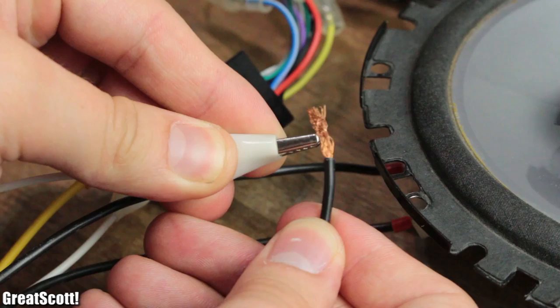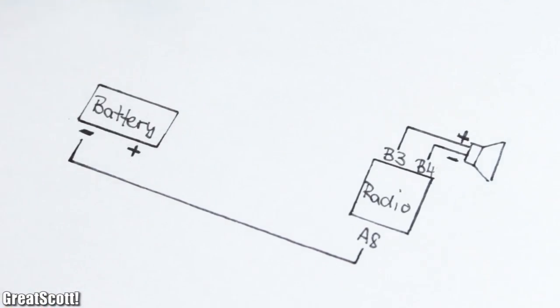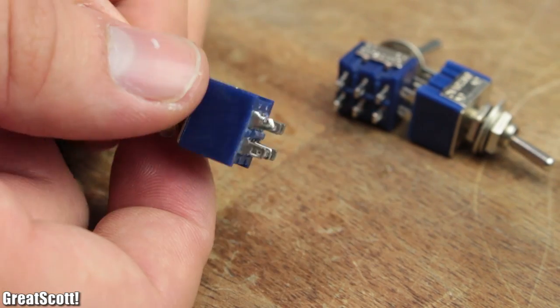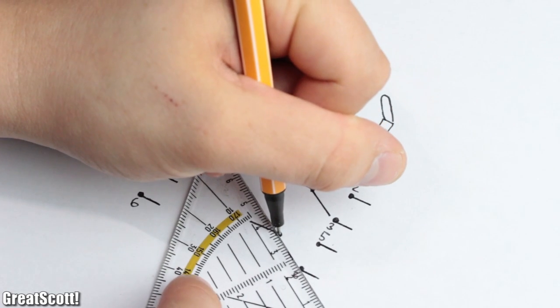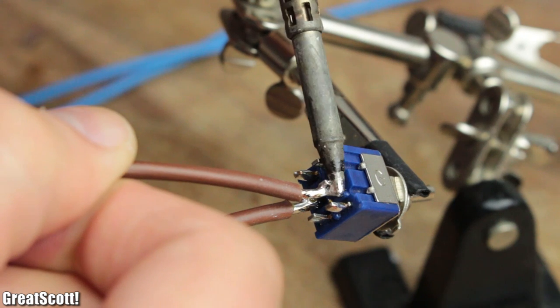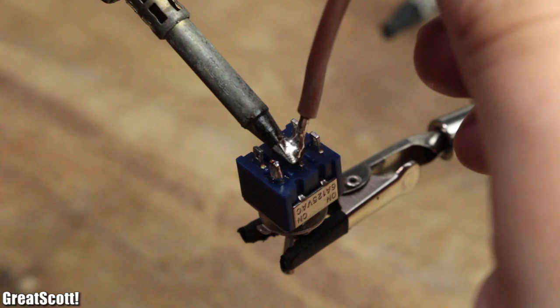Then I hooked up the ground pin of the radio to the negative terminal of one battery and got myself two double pole double throw switches, which are basically two switches in one package. The first one received four wires which utilized the opposing output terminals of the switch pair, while the second one only got two wires soldered on.